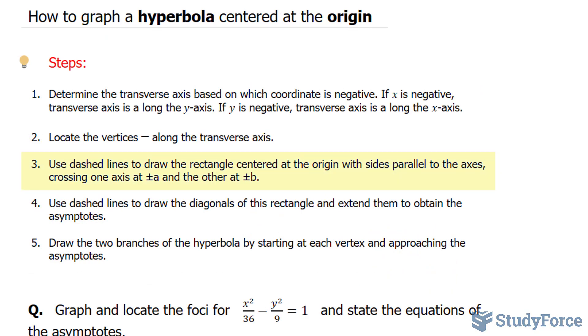In step number three, we're told to use dashed lines to draw the rectangle centered at the origin with sides parallel to the axis, crossing one axis at plus minus a and the other at plus minus b.